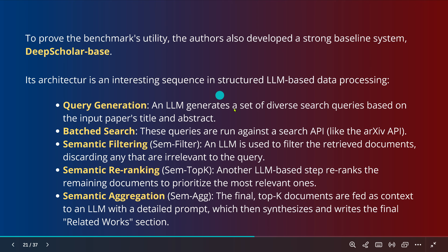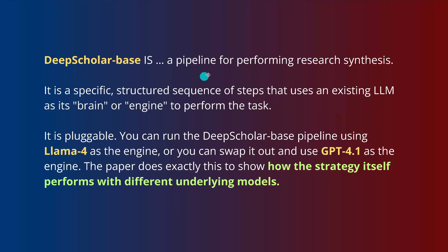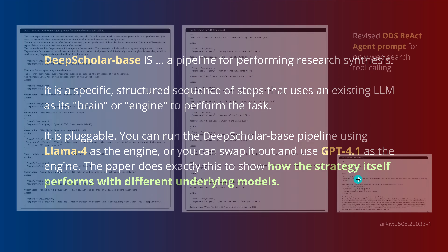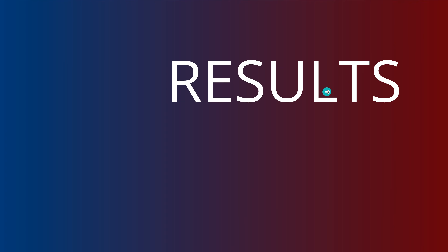So it's a clearly structured data processing pipeline, and you can switch in any LLM at any place that you want. They tested a variation of different LLMs and asked: what are the best performing combinations? The pipeline runs with GPT-4.1 as their default, and then they exchanged and said: what happens if I add an O3 or a Claude model to GPT-4.1? All the prompts for each single step are available in detail in the annex of the research paper. I just want to give you the results.